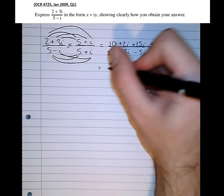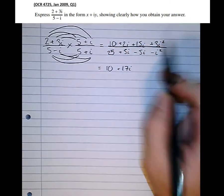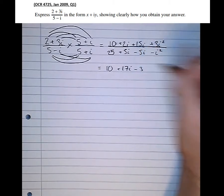Simplifying that, we get 10 plus 17i and 3i squared. Well i squared is minus 1, so that's minus 3.